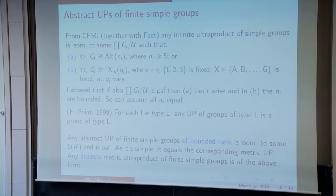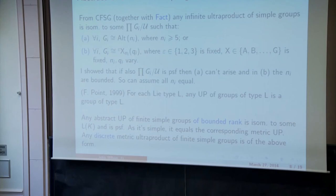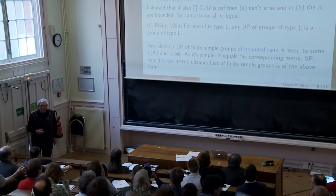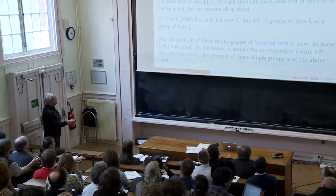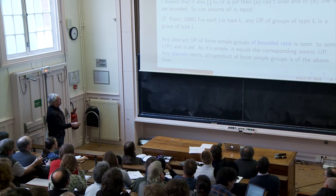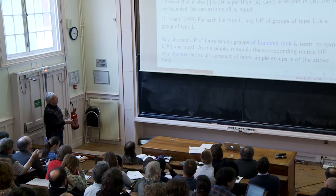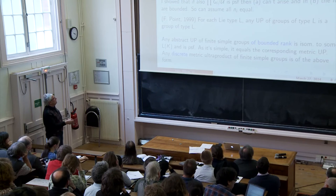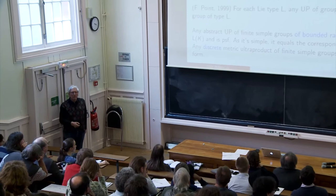So now what does this say about metric ultraproducts? What we've seen is that any abstract ultraproduct of finite simple groups of bounded rank is isomorphic to some L(K) and is pseudo-finite. Well, the metric ultraproduct of those groups is a homomorphic image, but this group is simple, so it's actually equal to the corresponding metric ultraproduct. And it turns out that all discrete metric ultraproducts, discrete as a metric space, of finite simple groups are of the above form. They're all these groups L(K) for some pseudo-finite field K.